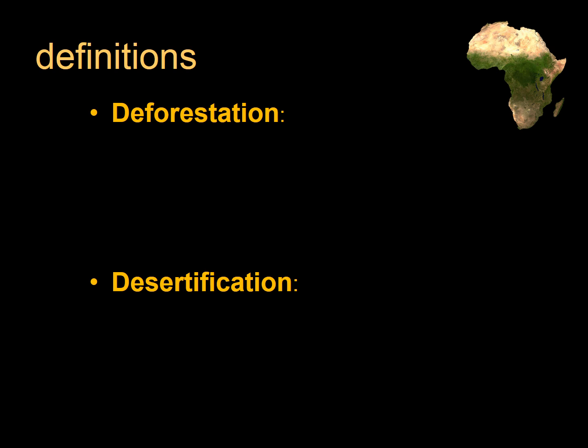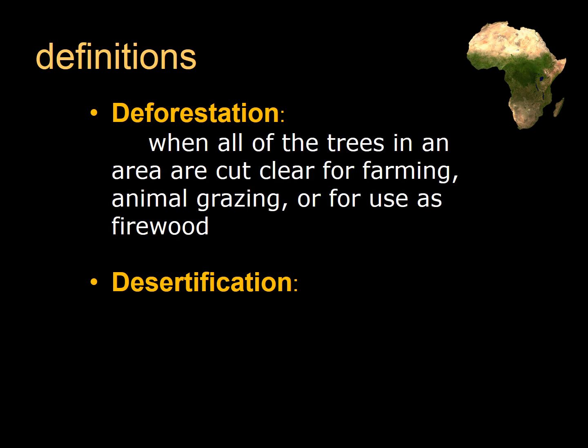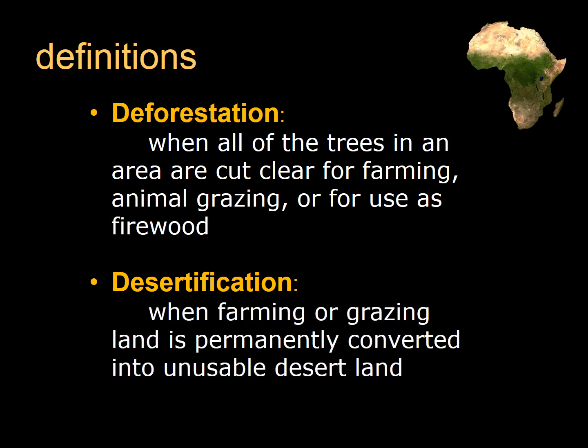Let's start with some basic definitions. Deforestation refers to when all the trees in an area are cut clear for farming, animal grazing, or for use as firewood. Deforestation can feed into desertification because when deforestation becomes a permanent situation, that opens up the door for desertification. Desertification refers to when farming or grazing land is permanently converted into unusable desert land — land that you cannot use to grow crops anymore.